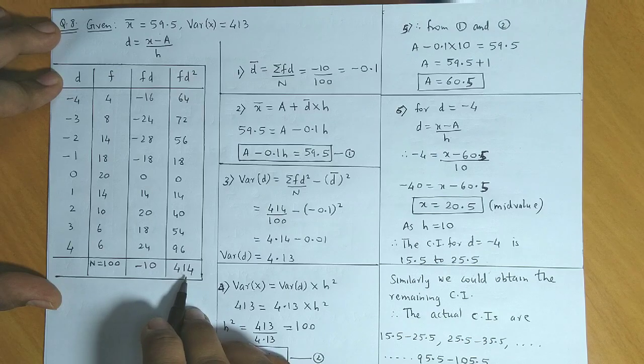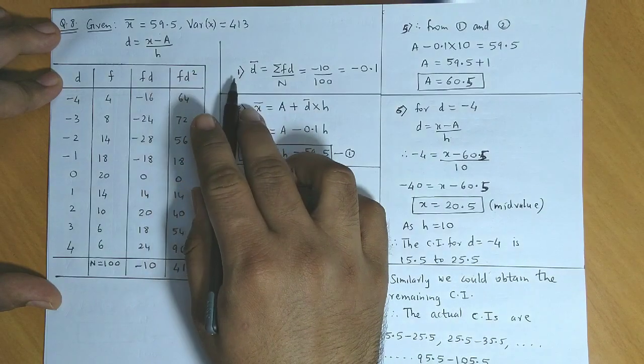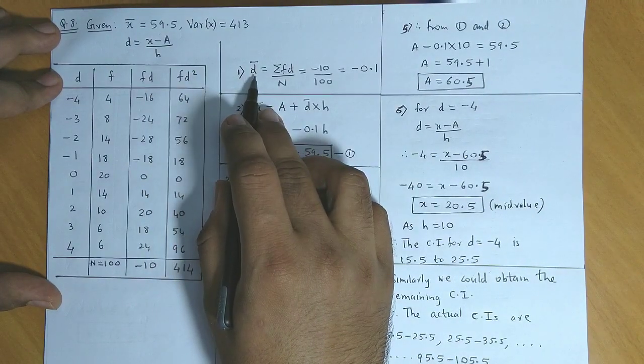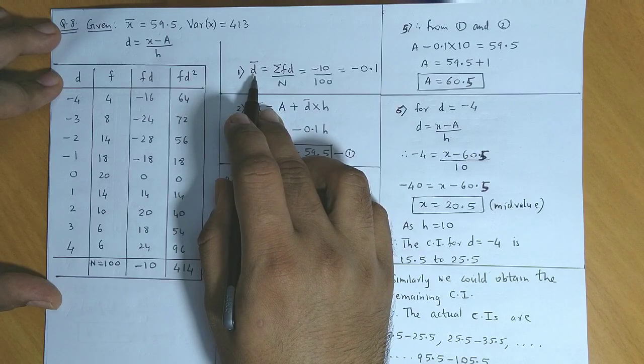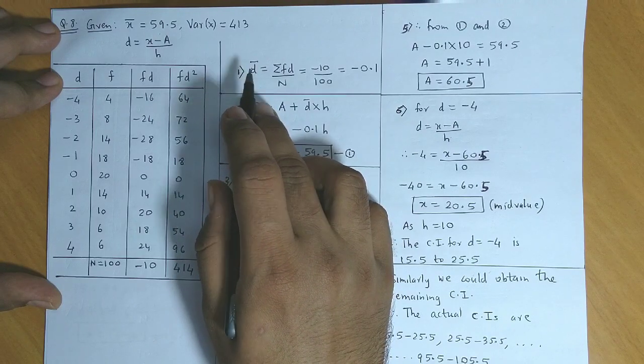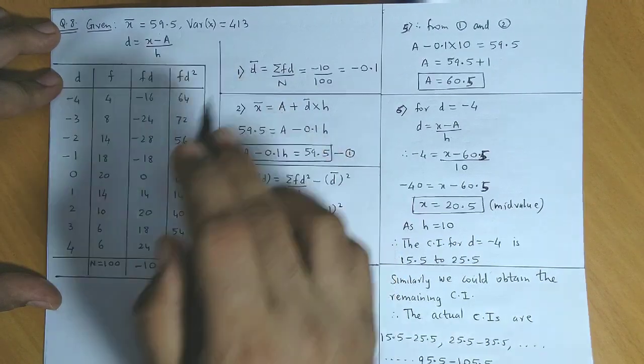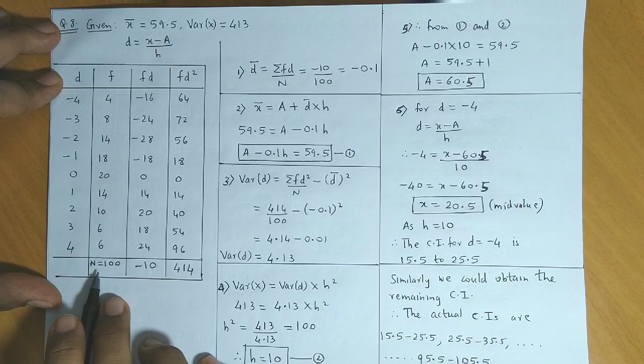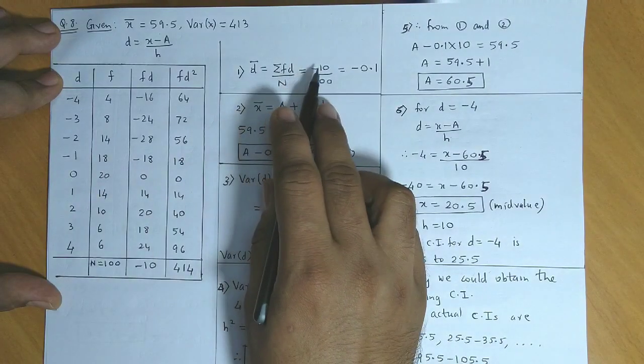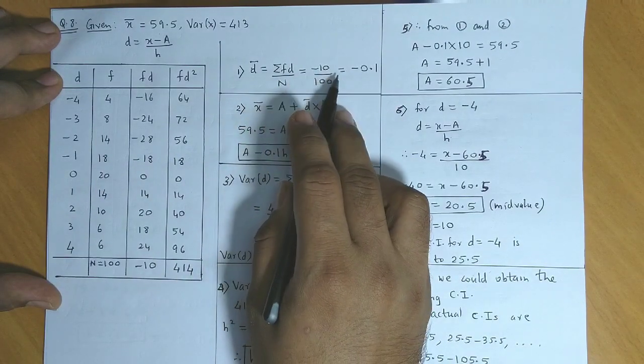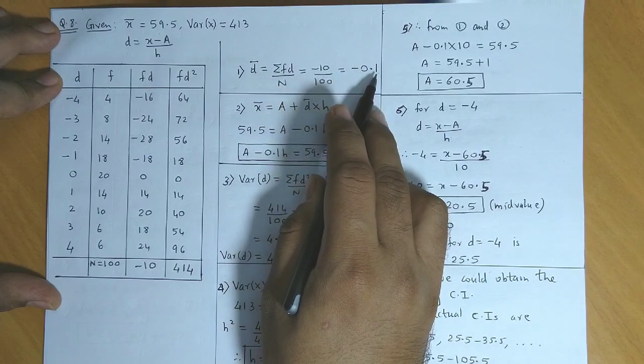Step number one: we obtain d̄. In the previous sum we considered ū; here they've mentioned it as d. So d̄ equals summation of fd divided by n, which is minus 10 upon 100, equal to minus 0.1.